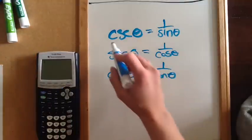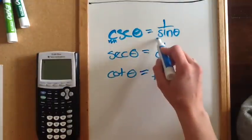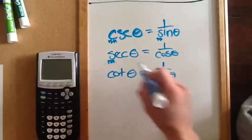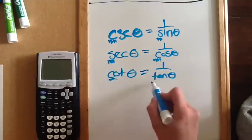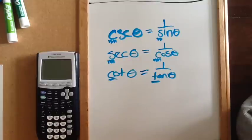So the way that I like to remember this: this one starts with a C, so it goes with an original S. This one starts with an S, so it goes with an original C. And then cotangent and tangent sound like they should go together. That's how I remember what reciprocals go together.